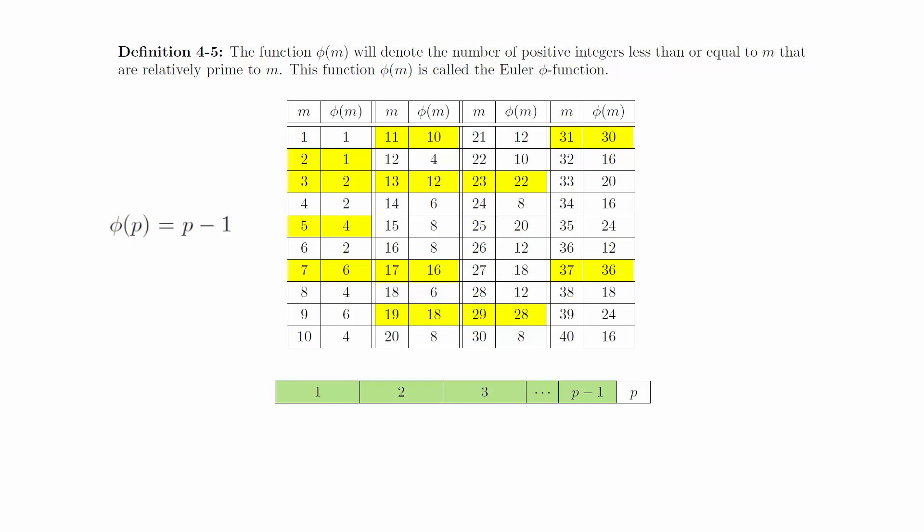This makes sense because all the positive integers less than p must be relatively prime to p, otherwise p would not be prime. With just a little bit of thought, we can actually derive the value of phi of p to the m following the same type of logic.